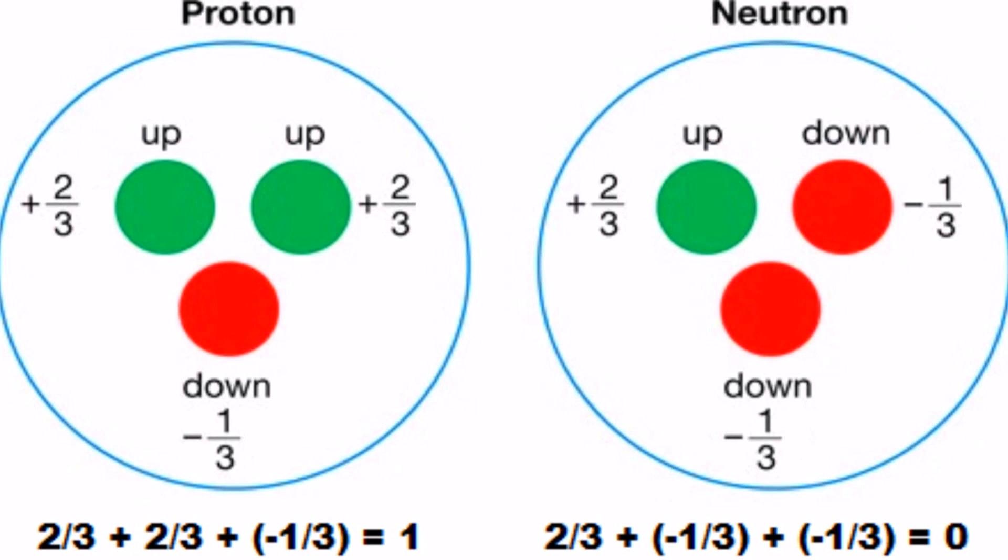So if you add the fractional charges for both the proton and neutron in respect to their quark compositions, you'll get 2/3 + 2/3 + (-1/3) = 1 for the proton.